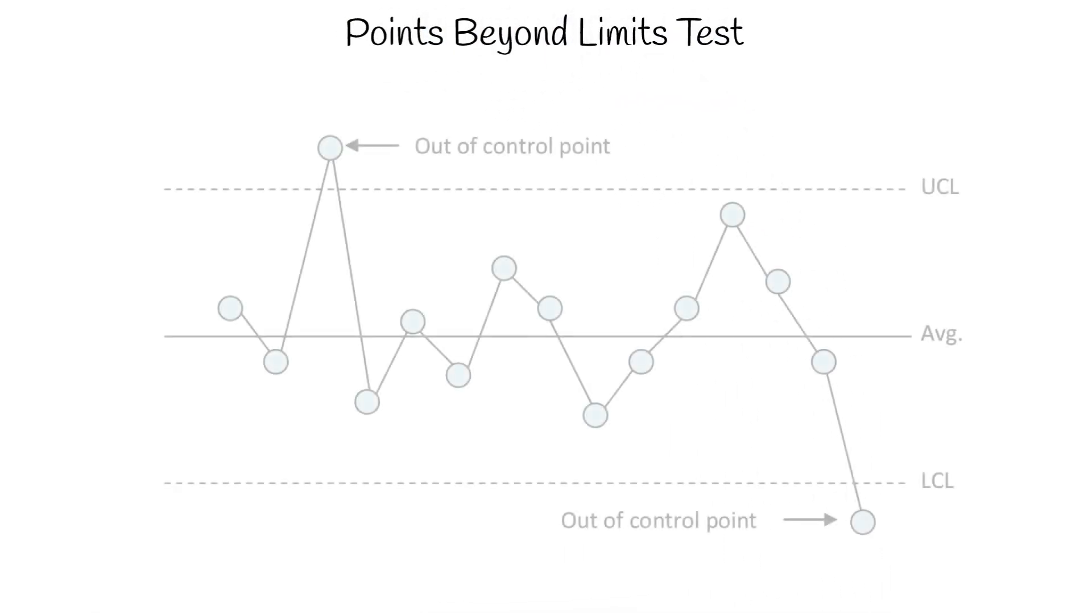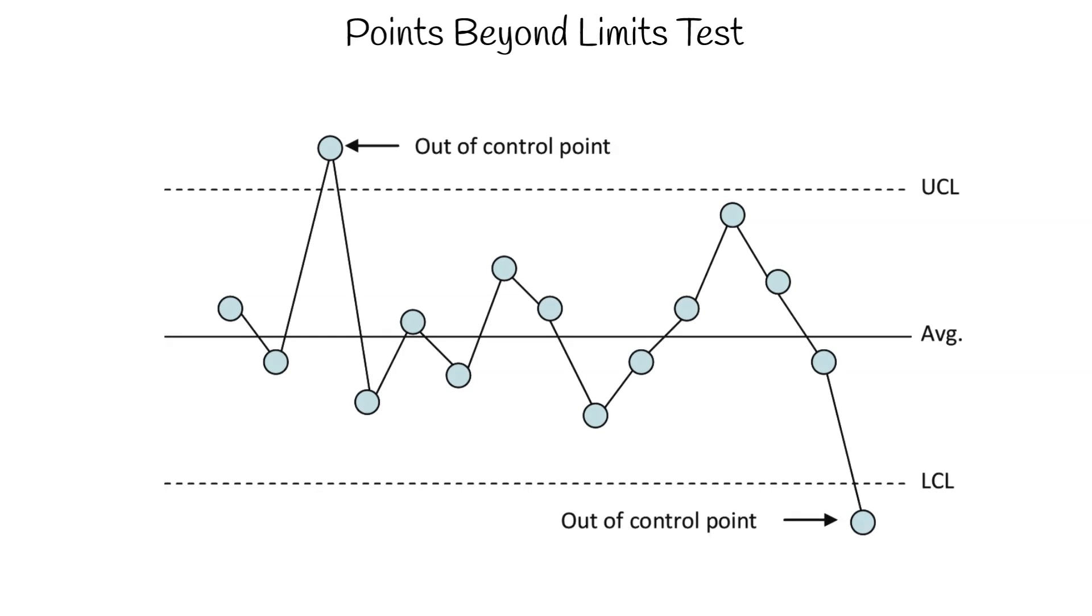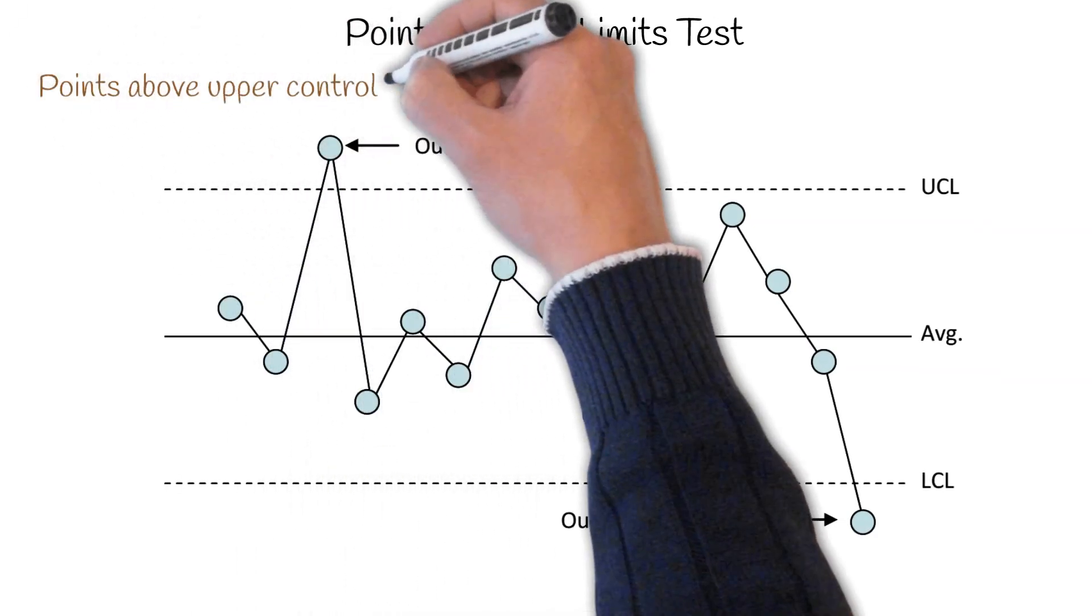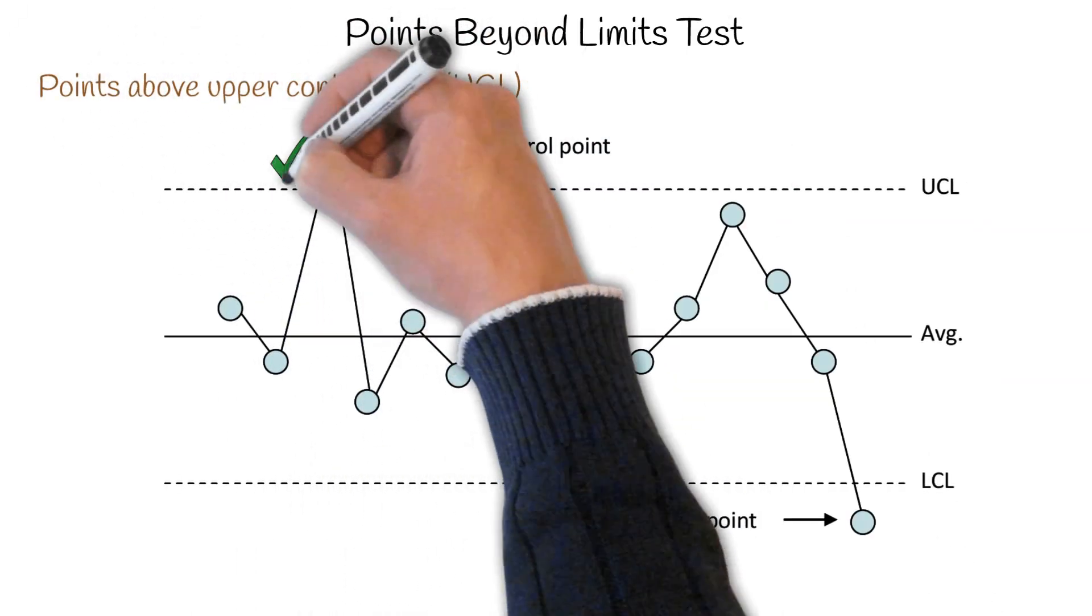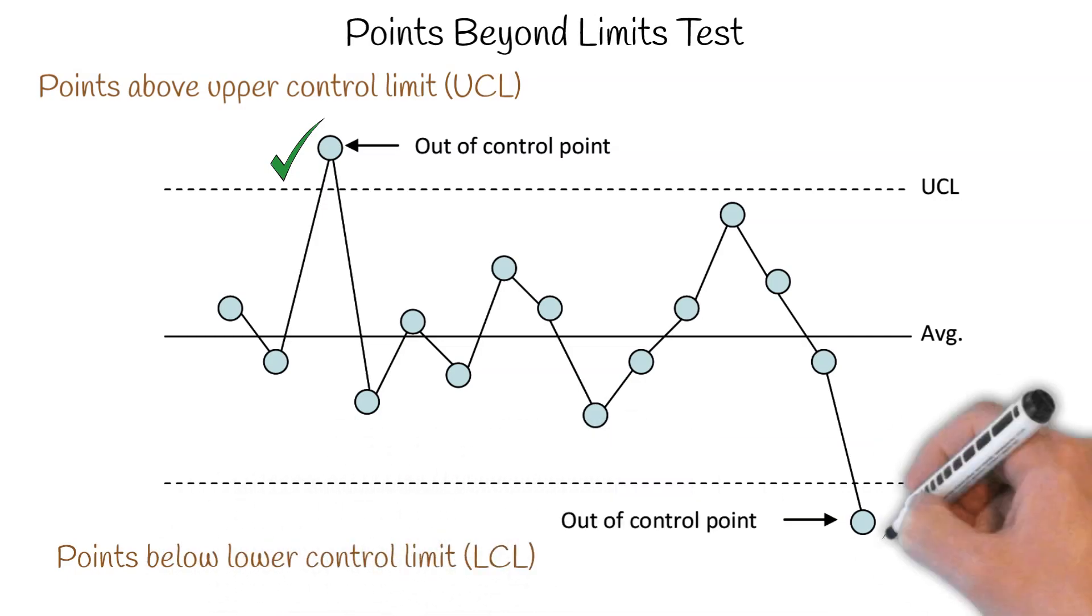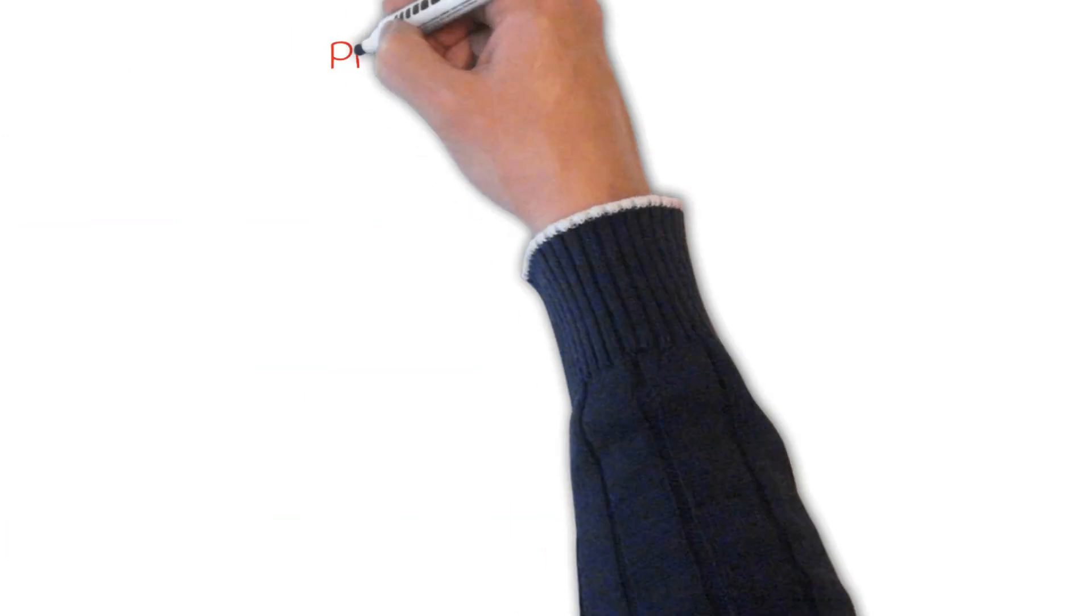We'll start with points beyond the control limits. Anytime you have a point that's above the upper control limit, that's a special cause of variation being present, an out of control point. And if you have a point below the lower control limit, that's an out of control point too.